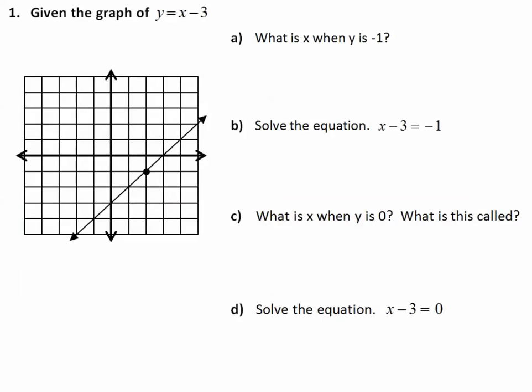Let's begin by looking at the given graph of y equals x minus 3. The line is already graphed for you on the coordinate plane. Here is our x-axis and our y-axis. It's useful to have those labeled.